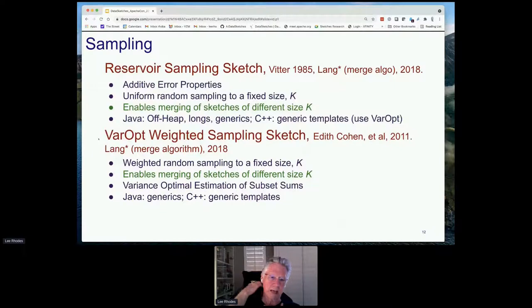Another area we have in the library is for sampling. I'm sure a lot of you are familiar with the reservoir sampling sketch, a la Vetter in the mid-80s. We have also enhanced this algorithm to allow merging with different size K. You can have a distributed system where in each node, you may be sampling with different accuracy parameters K, which results in different size reservoirs. But with our algorithm, it allows you to actually merge these different sketches with different K and still have very reasonable error results. This is also available in C++, Python and Java.